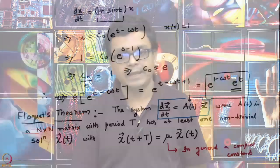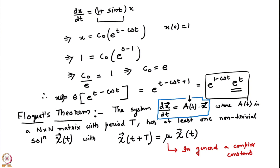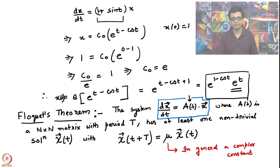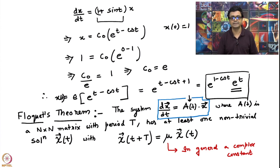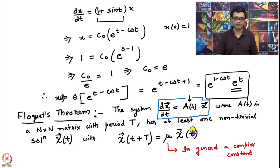We were looking at the proof of Floquet's theorem. Recall that Floquet's theorem says that if you have a first order system dx/dt = A·x, where A is an n×n periodic matrix with period T, then this system has at least one non-trivial solution χ(t) where χ(t) satisfies χ(t+T) = μ·χ(t). Note that μ in general is a complex constant.